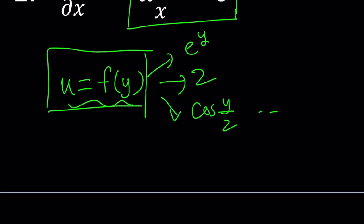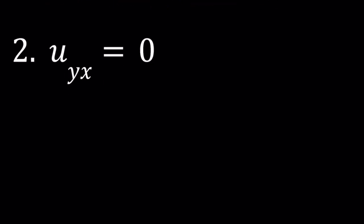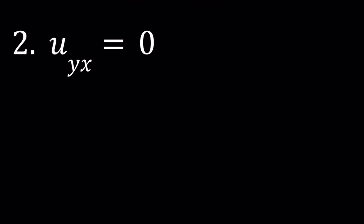Let's go ahead and take a look at the second example — our problems are going to get slightly harder. At the end we're going to do the problem that's on the thumbnail. Now, notice that we have the partial derivative of u with respect to y first and then with respect to x, and the answer is zero. So you have to look at the last operation performed on u.